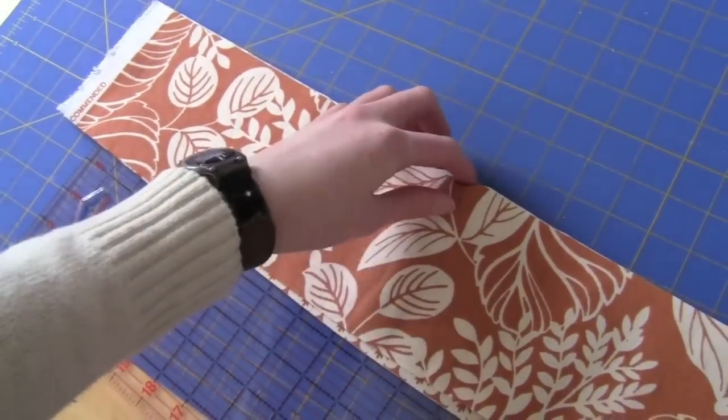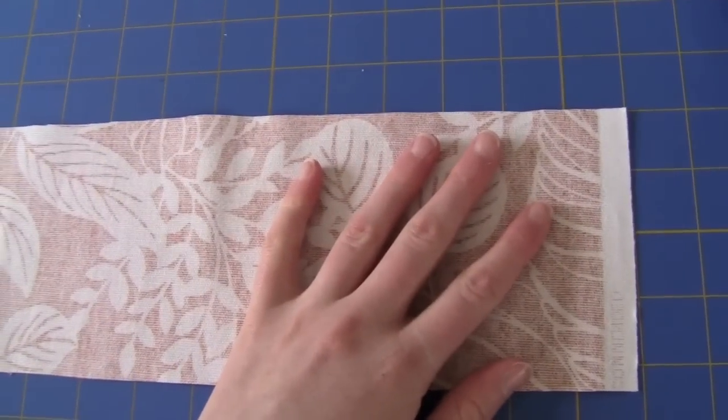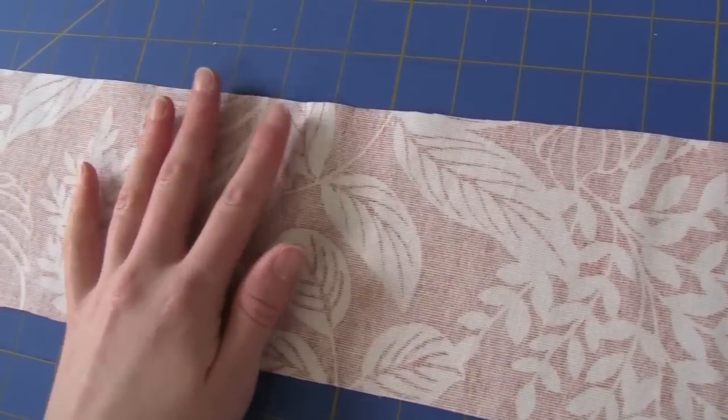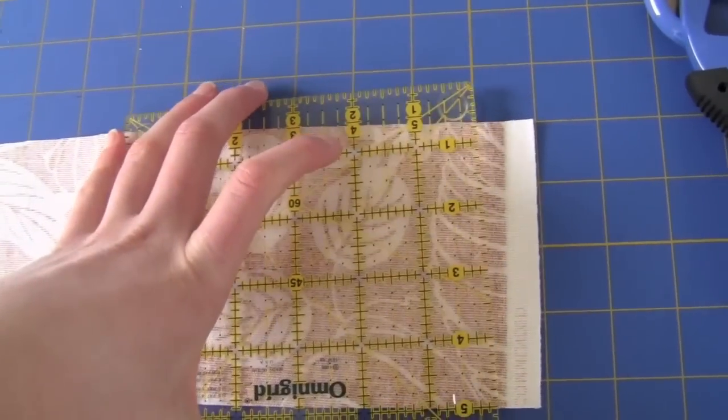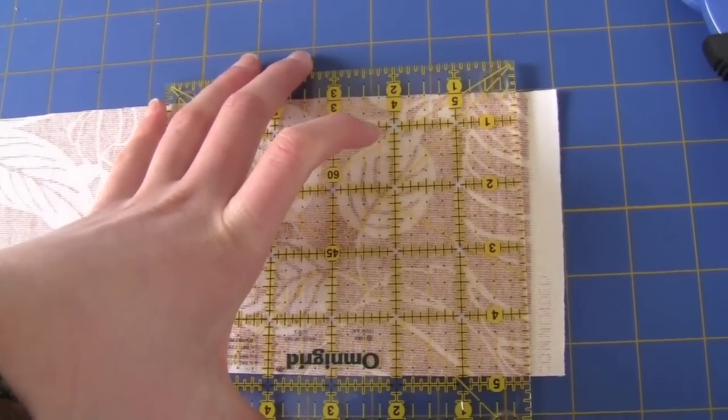So now we get to cut them into squares. Line it up nice and straight. Now I'm going to trim off the end because we won't use that. Line it up and then you cut it.